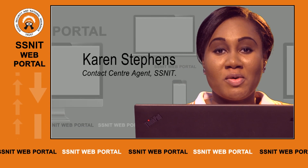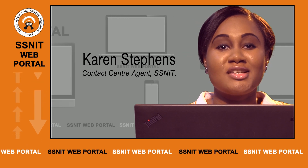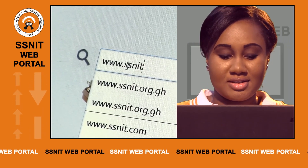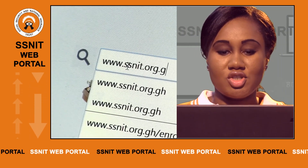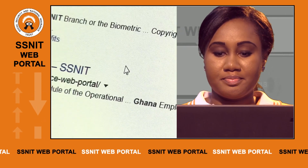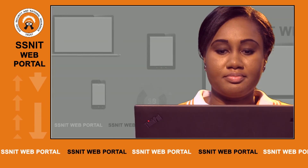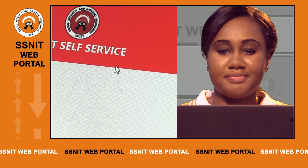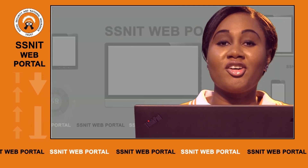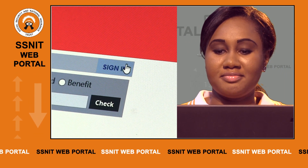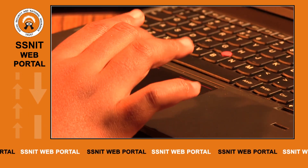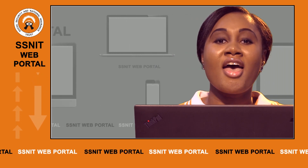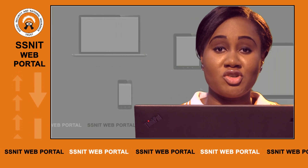To access the SNIT web portal, you must first visit the SNIT website at www.snits.org.gh. Select the self-service menu and click on the sign in button. Type in the username, which is your social security number, and the password sent to the email address you provided.